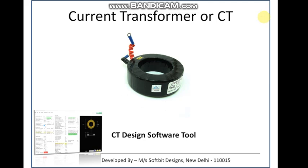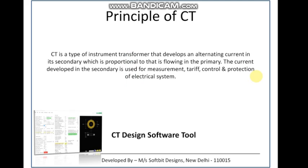To start with, let us see the principle of CT. A CT is a type of instrument transformer that develops an alternating current in its secondary which is proportional to the current flowing in the primary. The current developed in the secondary is used for measurement, tariff, control, and protection of the electrical system.